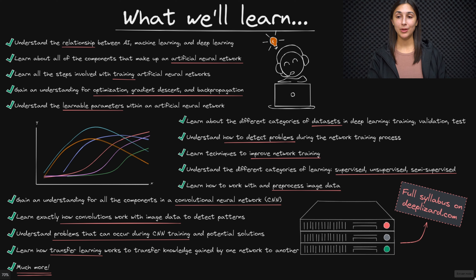We'll learn to understand how we can detect problems during the network training process, and techniques to improve the training process when we encounter these problems. We'll also gain an understanding of the different categories of learning, including supervised, unsupervised, and semi-supervised learning. And we'll be learning a lot of information for how to work with and process image data for neural networks. We'll spend time gaining an understanding of all of the components involved in a convolutional neural network, or CNN, which is one of the most popular types of deep neural networks. We'll learn how CNNs process image data through convolutions, as well as problems that can occur during CNN training and their potential solutions. We'll also learn about transfer learning, which allows us to take knowledge gained from one task and apply it to a new one.